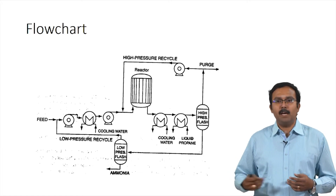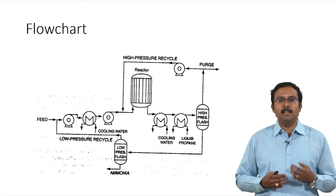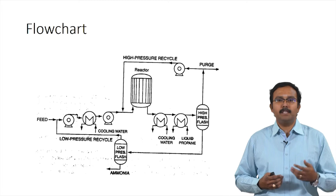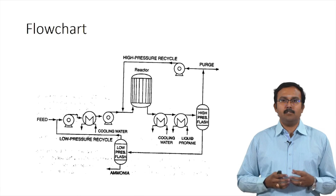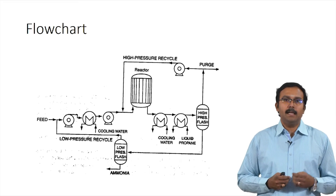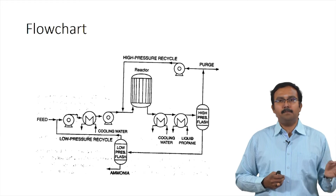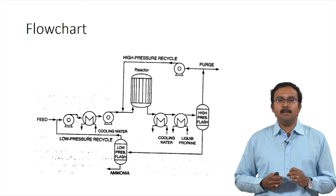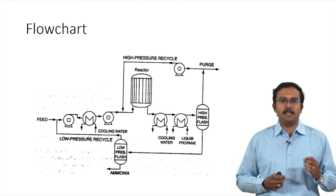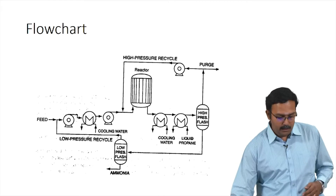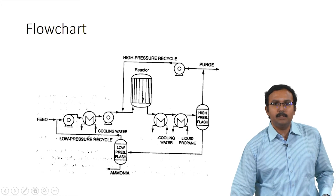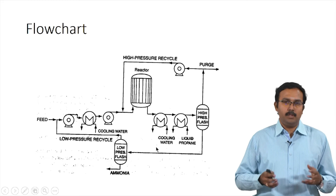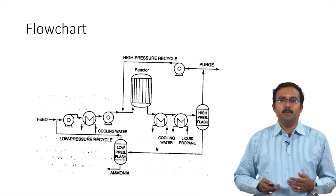The other product stream of the high pressure flash is sent to a low pressure flash where ammonia is recovered, and the low pressure recycle is sent back to be mixed with the feed. Individual processes are represented using proper diagrams — for example, a pump, a heat exchanger, a reactor, and flash units. Alternatively, you can draw a block diagram which depicts the same process using blocks with proper labels instead of specific equipment representations.